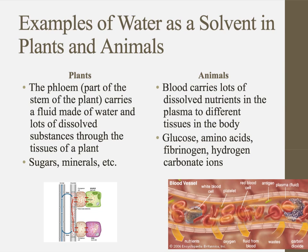Plants also have to transport things. They don't have blood, but they have another transport system. One of the ones that carries dissolved things is the phloem. Plants have two types of tubey things in their stem: the xylem, which carries water, and the phloem. The phloem carries dissolved nutrients and other substances throughout the plant — things like sugars or minerals are dissolved in solution and moving throughout that plant.